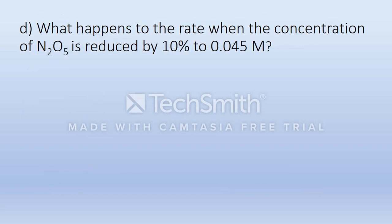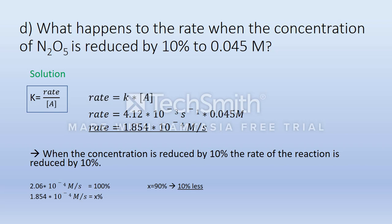And the last part is D. What happens to the rate when the concentration of N₂O₅ is reduced by 10% to 0.045 mol? And of course we need the same formula. When we solve the formula, we come to the conclusion that when the concentration is reduced by 10%, the rate of the reaction is reduced by 10%.